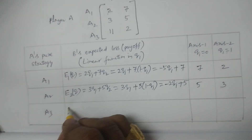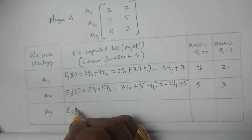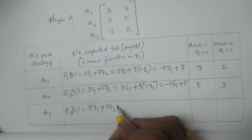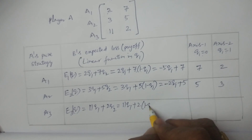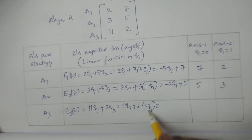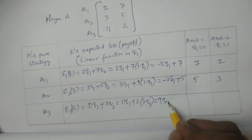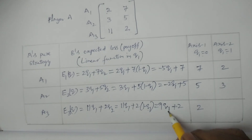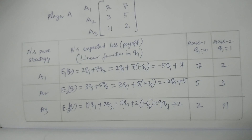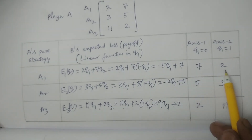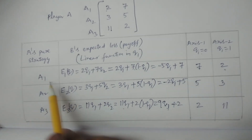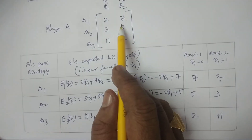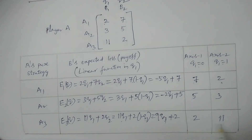Similarly, for strategy A3, B's expected loss E3(q) equals 11q1 plus 2q2, which equals 11q1 plus 2(1 minus q1), converting in terms of q1: 11 minus 2 equals 9, so 9q1 plus 2. Substituting q1 equals 0 gives 2; substituting q1 equals 1 gives 9 plus 2 equals 11. So the points are 2 and 11. Summary of axis values: A1 gives (7, 2), A2 gives (5, 3), A3 gives (2, 11).